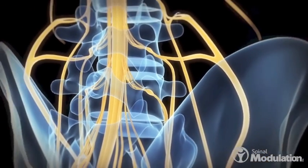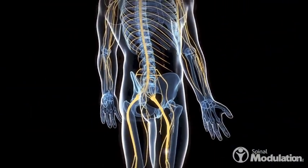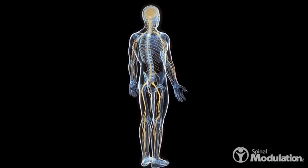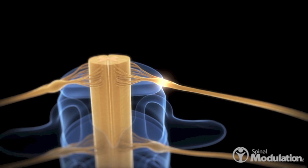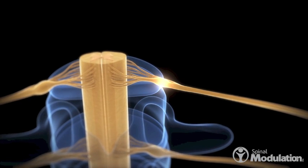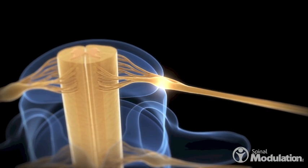It contains the primary sensory neurons that transmit pain signals from the peripheral nerves to the brain. The DRG has emerged as an exciting new target for spinal cord stimulation.